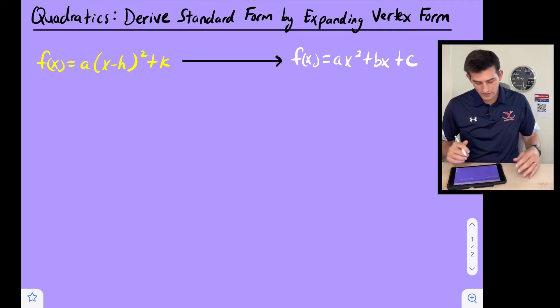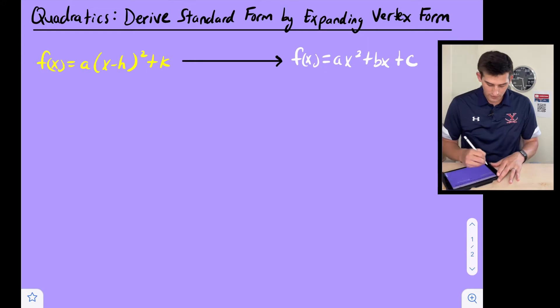Here is what we have on the screen. In yellow we have vertex form and in white we have standard form. So how do we go from left to right? How do we go from vertex to standard?